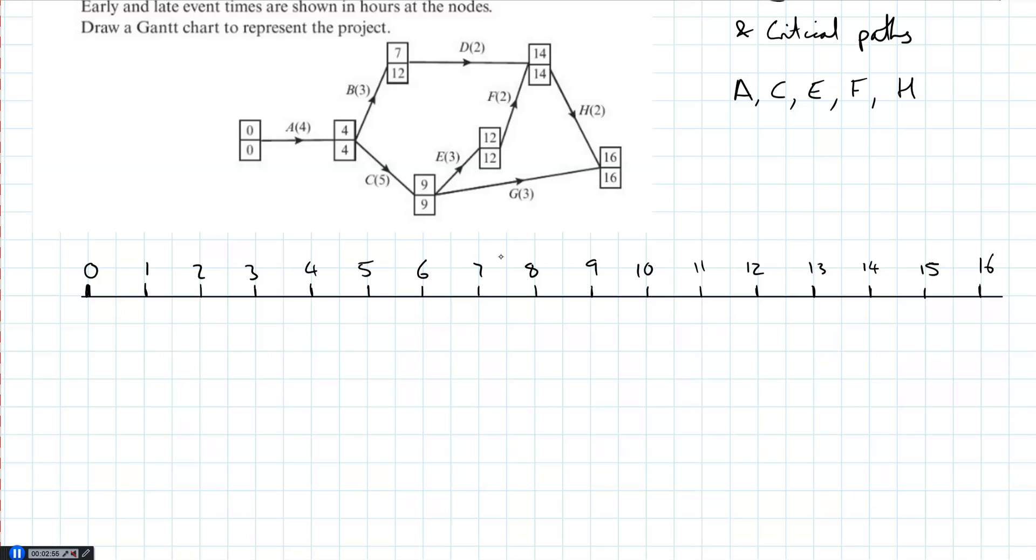The whole point of critical paths is that they don't have a float, so there's no gapping between them. So we're going to start with A. A is four days. You can use a ruler if you want to make things a bit easier for you. So we're going to put A, and you put them as a block on a row like this, and label it in the middle.